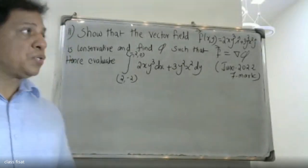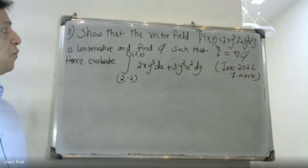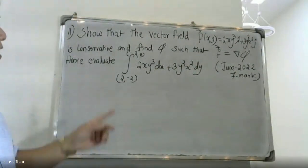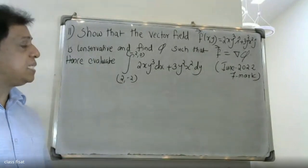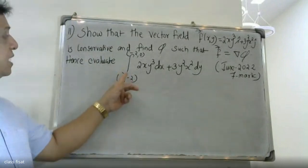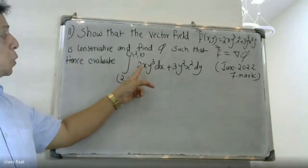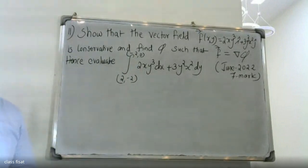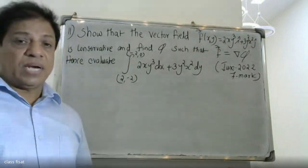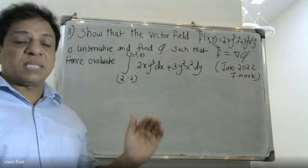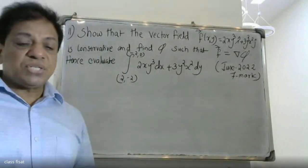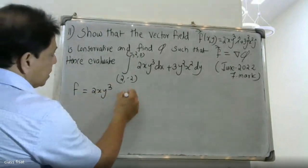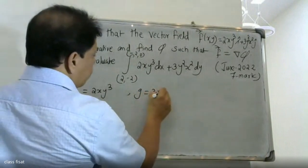Good morning students. The question asks to show that the vector field F(x,y) = 2xy³ i + 3y²x² j is conservative, and hence evaluate the line integral from (-2,0) to (2,-2) of 2xy³ dx plus 3y²x² dy.